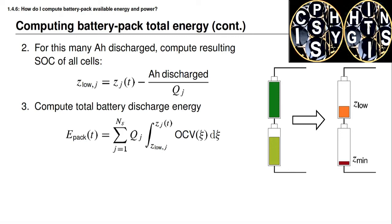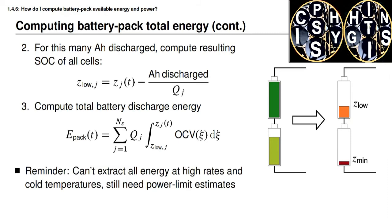Now we can compute the energy removed for each cell and for the battery pack. The pack energy is the sum over all cells of the capacity of that cell multiplied by the integrated open circuit voltage relationship, integrated between the present state of charge and Z_low for that cell. Remember it's not possible to extract all of this energy at high rates and cold temperatures because of cell resistances — that's why we also need the power estimates to tell us how quickly we can extract this energy.